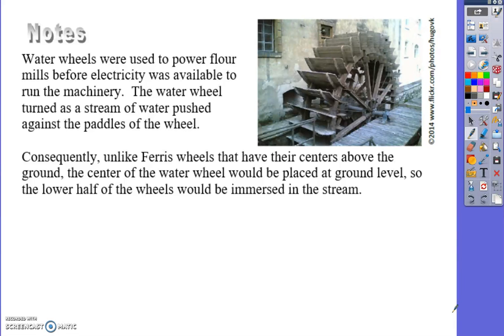Water wheels were used to power flour mills before electricity, mostly to grind up grain to make flour - corn flour, wheat flour, etc. Because it was using water from a stream that came off a mountain, the middle is at the ground, and that's the key of everything we're talking about today. The middle is at the ground and half of it's negative and half of it's positive.